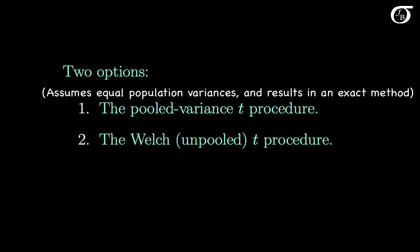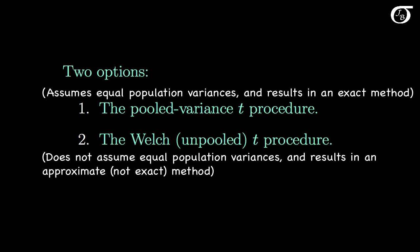The other option is the Welch, or unpooled t-procedure. Here we don't have to assume that the population variances are equal, which is nice, but the downside is we end up with something that doesn't have exactly a t-distribution, it's only approximately a t-distribution. But that said, it works very well in a lot of situations.